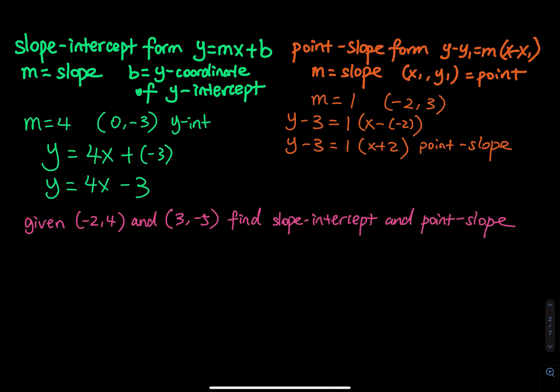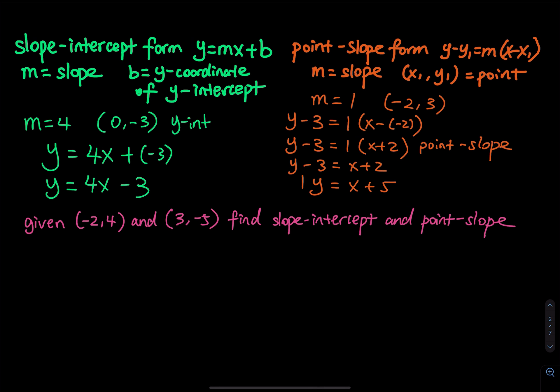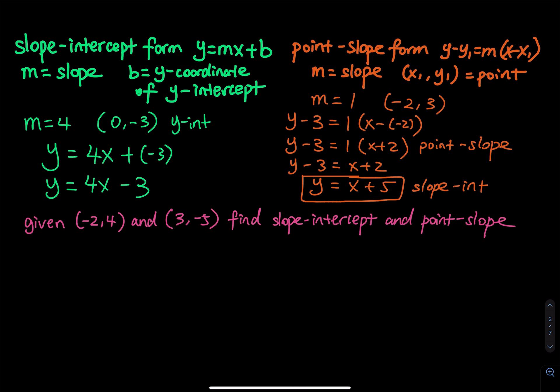Usually the book or exam will ask you to put this in slope-intercept form. You distribute the slope and then move the minus 3 to the other side. So y minus 3 equals x plus 2, then y equals x plus 2 plus 3, which equals 5. So y equals x plus 5. This is your slope-intercept form — you can see the slope and the intercept.